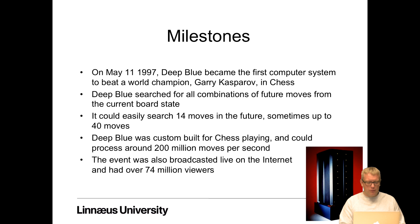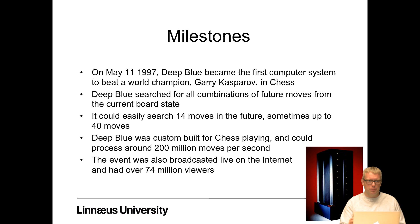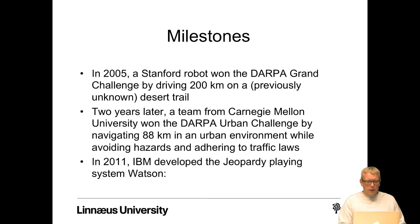Some milestones: on May 11th 1997, Deep Blue became the first computer system to beat a world chess champion, Garry Kasparov. Rather than understanding how a human plays chess, Deep Blue searched all combinations of future moves from the current board state — it could easily search 14 moves ahead, sometimes up to 40. Deep Blue was custom-built for chess and could process around 200 million moves per second. The event was broadcast live on the internet and had over 74 million viewers — one of the first large AI broadcasts online.